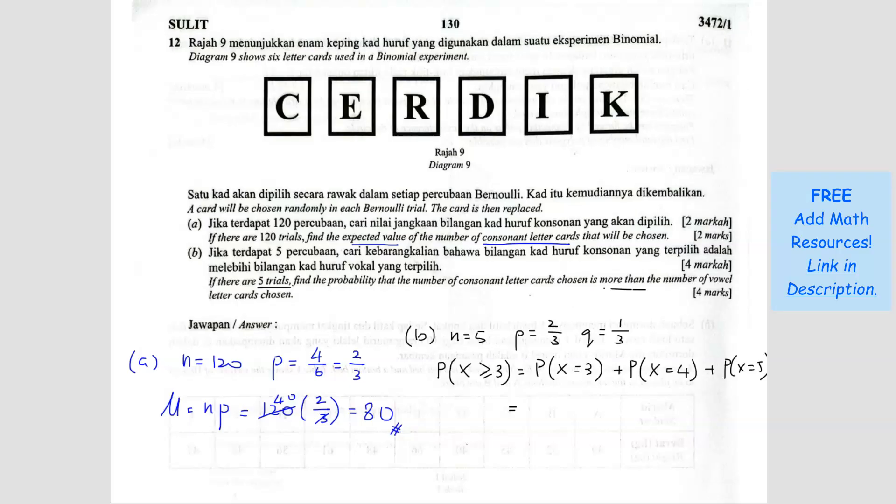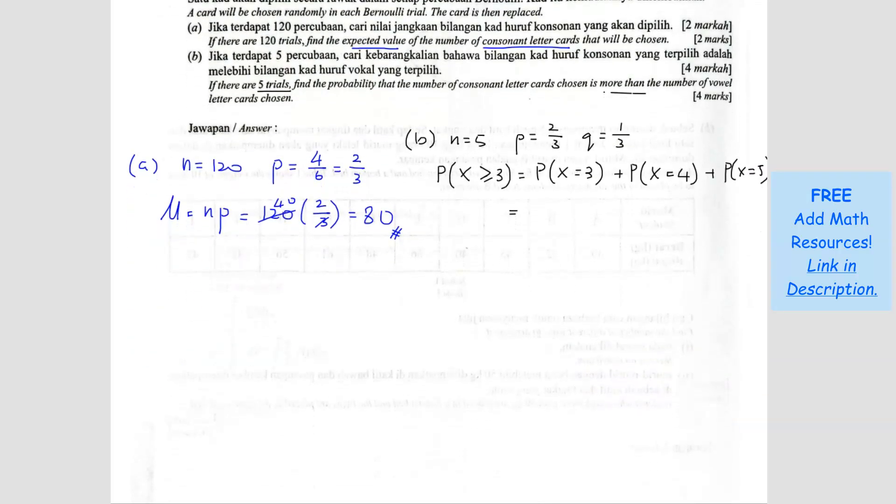So how to find the binomial? N, NCR, right? So N is 5. So 5C3. And then P value is 2 over 3. So the P value is always using the 3 here. So 3, power 3. And then 1 over 3 times 5 minus 3, you get 2.